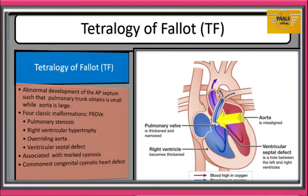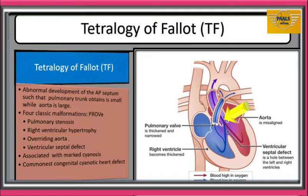Second: right ventricular hypertrophy, which is a pathologic increase in muscle mass of the right ventricle in response to the pressure overload. Third: overriding aorta, where the aorta is positioned directly over a ventricular septal defect instead of over the left ventricle, causing the aorta to receive blood from the right ventricle, which reduces the amount of oxygen in the blood.